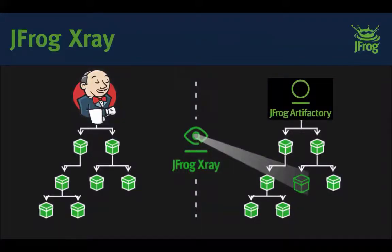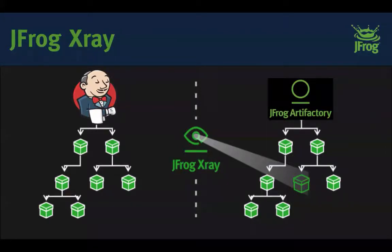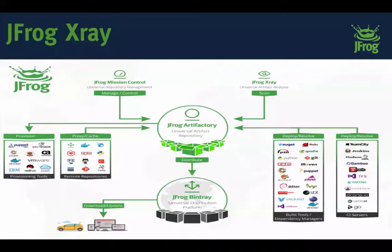So what is X-Ray? X-Ray sits on top of your Artifactory system to make sure all the artifacts you have, regardless of package type, are secure and free of vulnerabilities. X-Ray also works with Jenkins right now, and soon we're rolling out support for all other CI servers. It talks directly to Jenkins to ensure all packages and dependencies Jenkins is consuming are free of vulnerabilities.